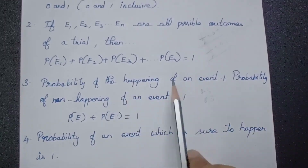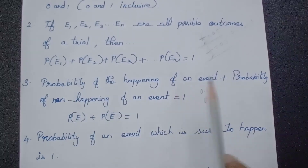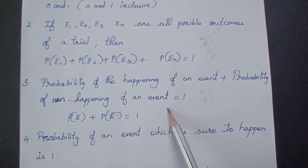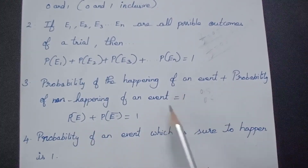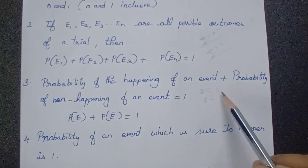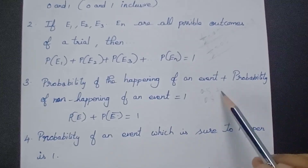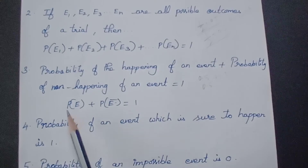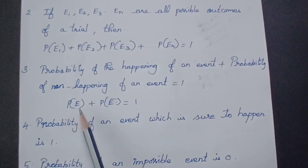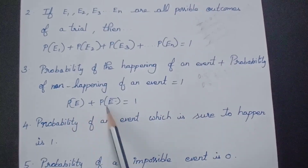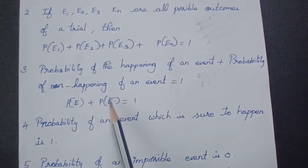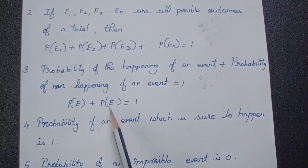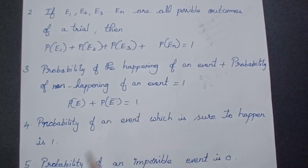So, probability of happening of an event plus probability of not happening of the event equals 1. If you add them, the result is 1. That means P(event) + P(not event) = 1.